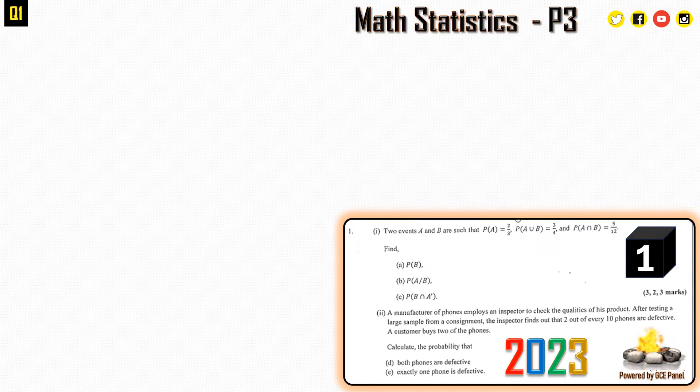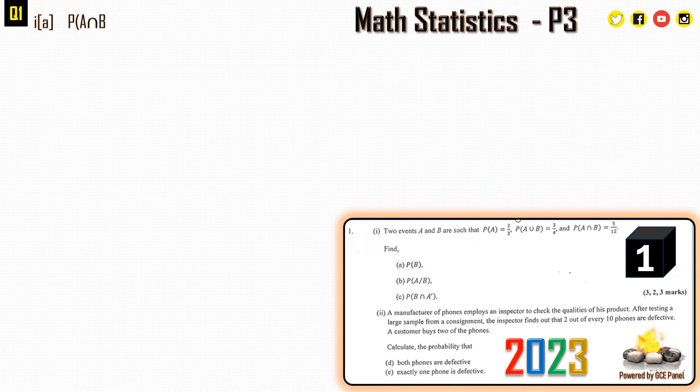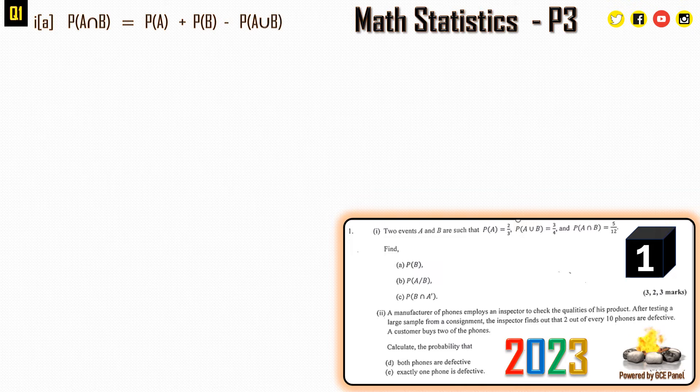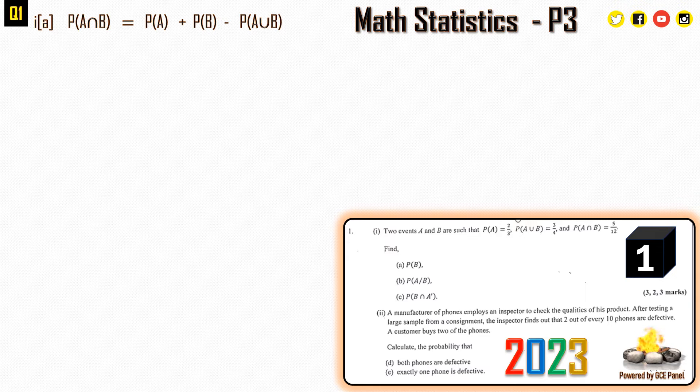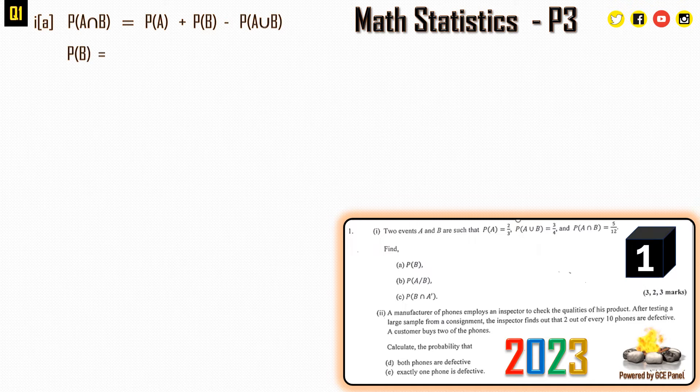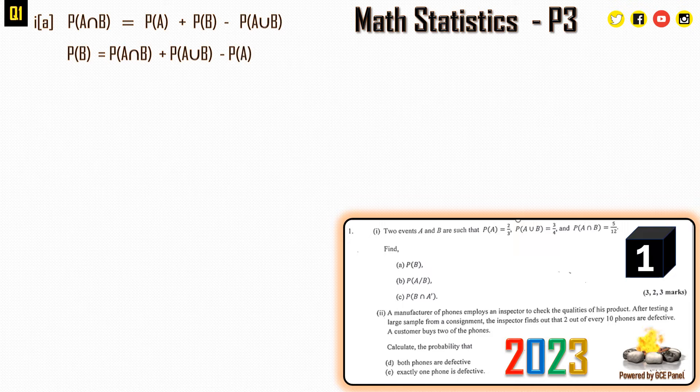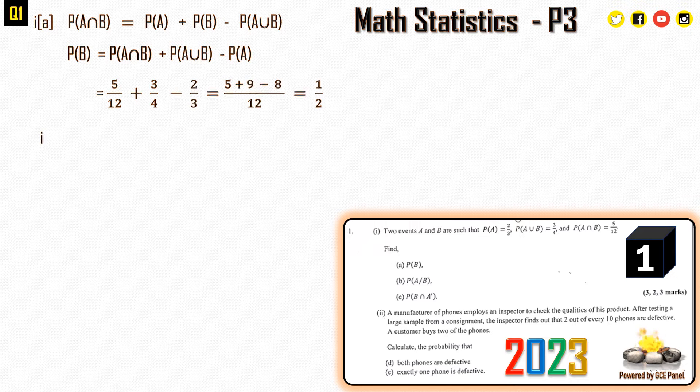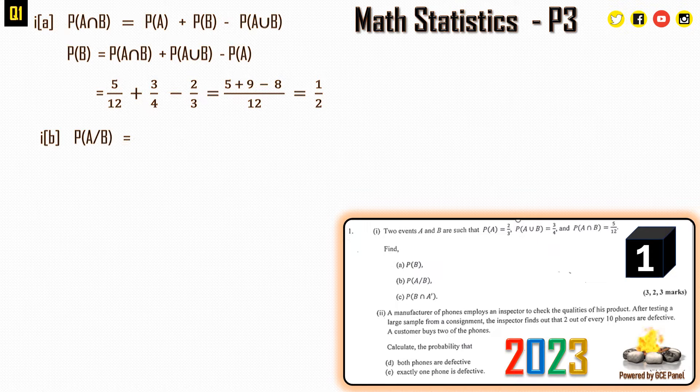In this question, for the first part find the probability of B, we know from the law of probabilities, the third law, that the probability of A intersection B is equal to probability of A plus probability of B minus probability of A union B. We can make probability of B the subject of this formula to obtain P(B) = P(A∩B) + P(A∪B) - P(A). When we substitute our values, that is 5/12 + 3/4 - 2/3, we obtain 1/2 as the solution.